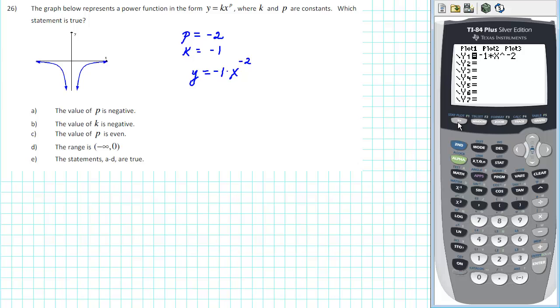We'll go back to y equals and our first statement says that the value of p is negative. Let's change p from negative to positive. So instead of using -2 for p, let's use positive 2 and see how that changes the graph.